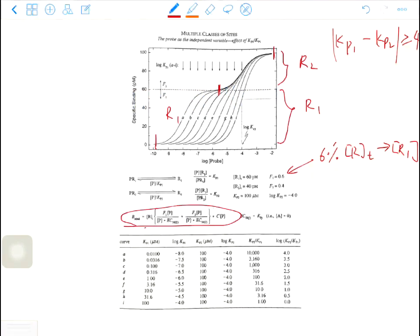Why is that? If you plot a rectangular hyperbola on a semi-log scale, it should span over 4 log units. So in order to observe two distinct rectangular hyperbola, the two EC50s of them should be at least 4 log units apart.